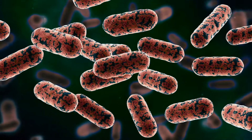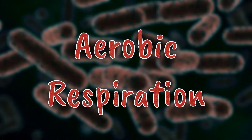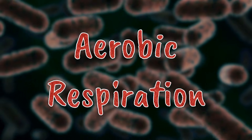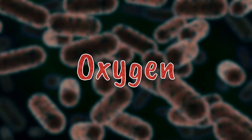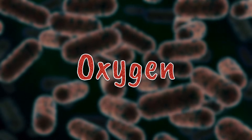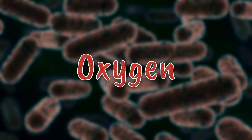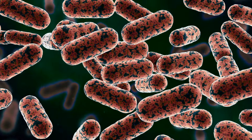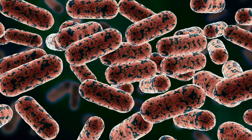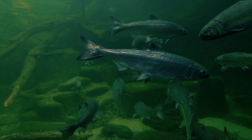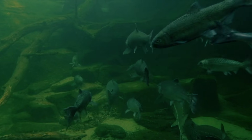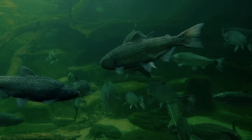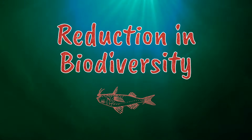These microorganisms rely on aerobic respiration, meaning that in addition to the food they take in, they also require oxygen. With such an extensive supply of dead organic material as food, these microorganisms grow in number and deplete the oxygen levels in the water. Fish and other organisms living in the water also rely on this oxygen, and when it becomes depleted, it results in death and a reduction in biodiversity.